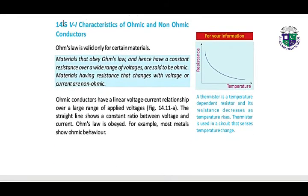VI characteristics of Ohmic and non-Ohmic conductors. Ohm's law is valid only for certain materials. Materials that obey Ohm's law and hence have a constant resistance over a wide range of voltages are said to be Ohmic. Materials having resistance that varies with voltage or current are called non-Ohmic. Here we have the picture showing resistance and temperature.